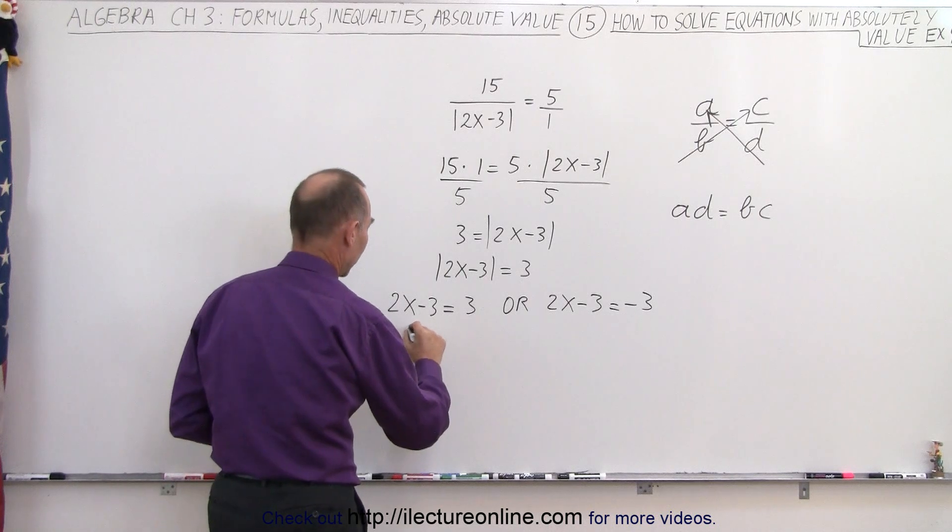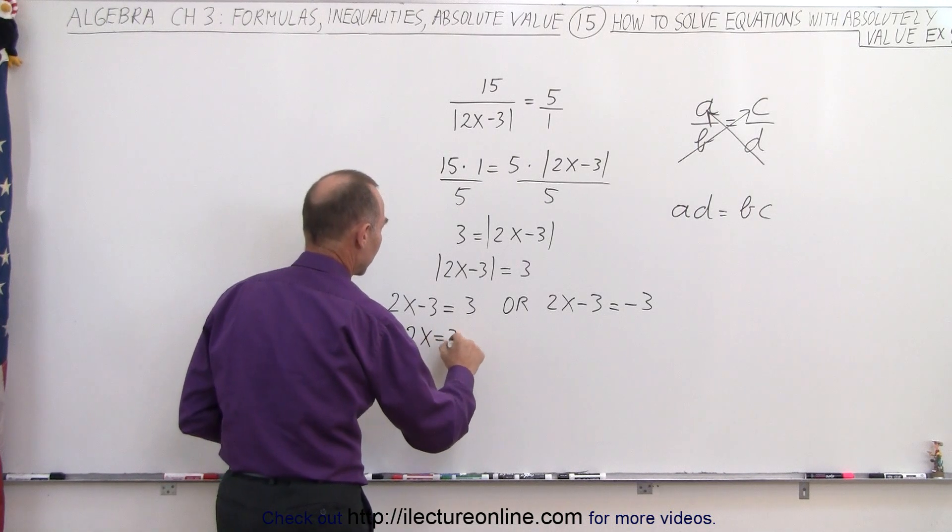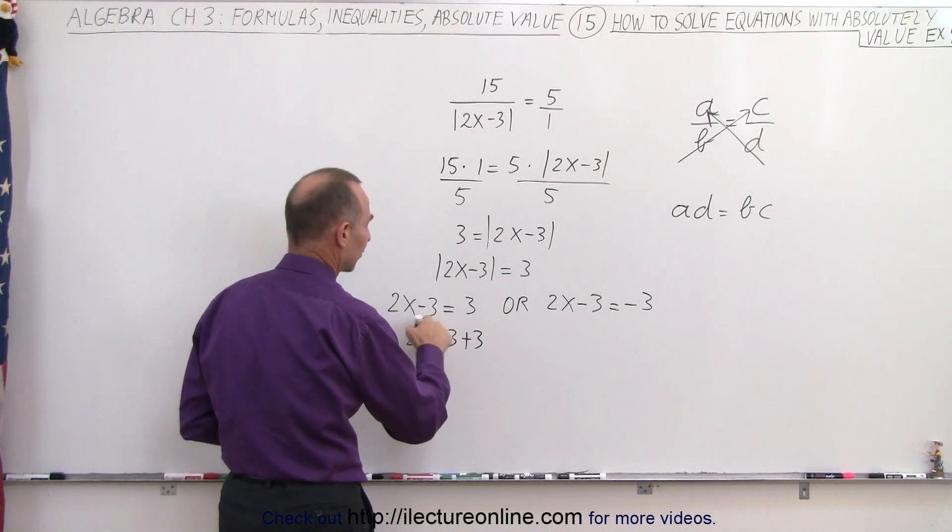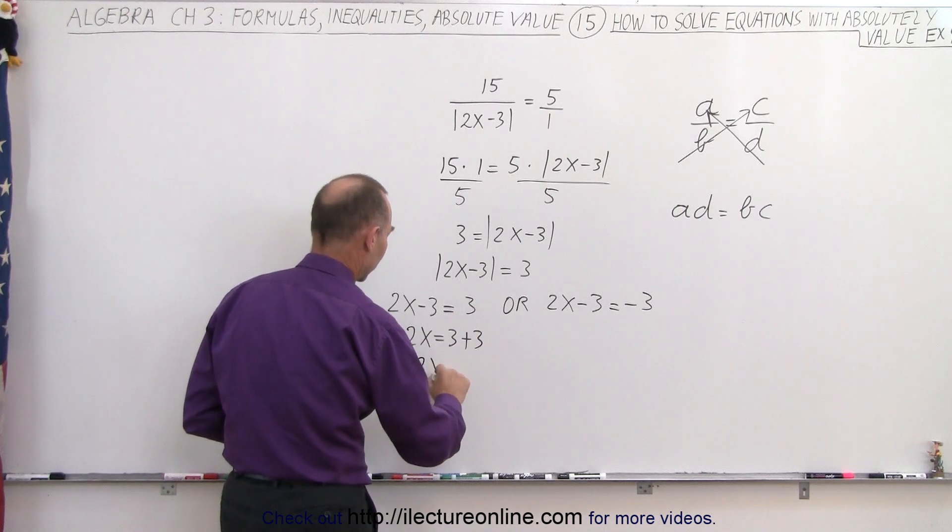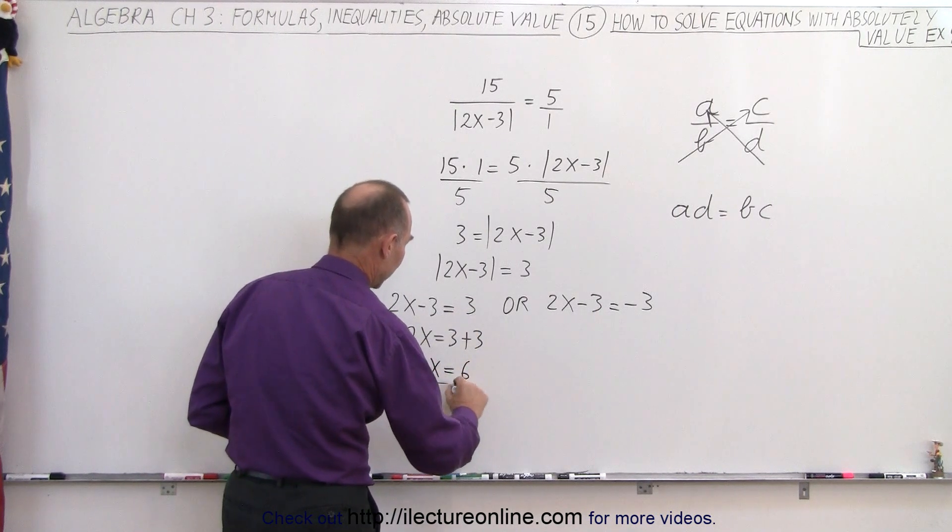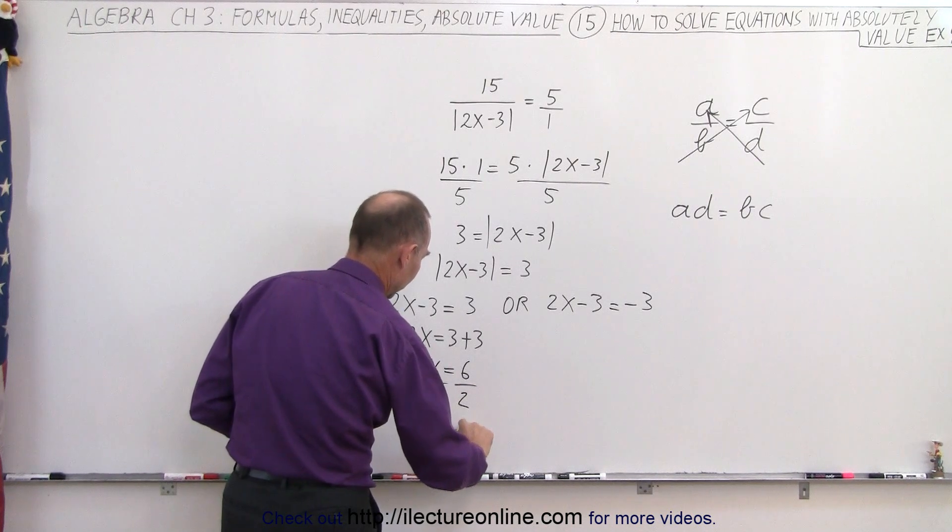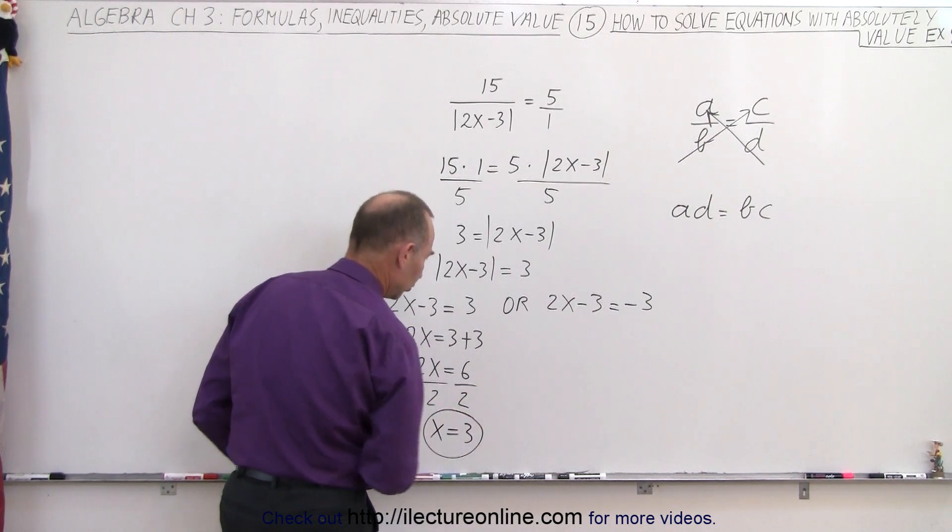So here we can write that 2x is equal to 3 plus 3 when we move the negative 3 across the equal sign. 2x is equal to 6. Divide both sides by 2, and therefore x is equal to 3 as one possible solution.